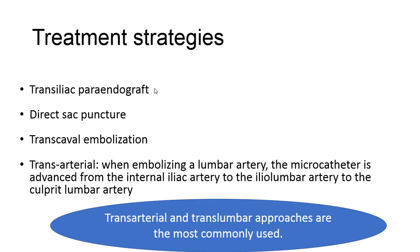There are different treatment strategies for endoleak type 2. One is transiliac para-endograft. The second is direct sac puncture. The third is transcaval embolization, and the fourth is transarterial. In the transarterial strategy, when embolizing a lumbar artery, the microcatheter is advanced from the internal iliac artery to the iliolumbar artery to the culprit lumbar artery. Transarterial and translumbar approaches are the most commonly used.